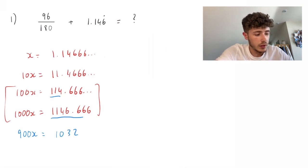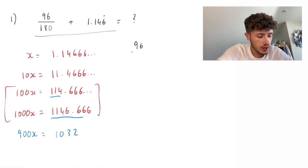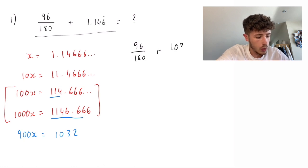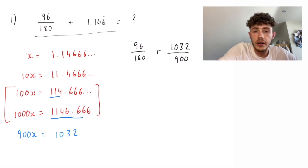So, we can get rid of the recurring decimal and rewrite this as 96 over 180 plus 1032 over 900. Now, our next step is to find a common denominator.